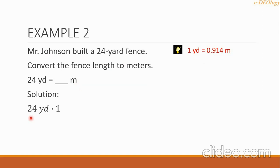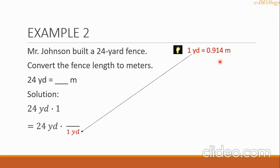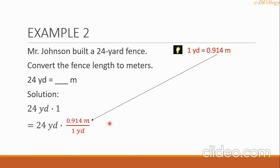For the solution, we multiply 24 yards by a value equal to 1 from the conversion equation. Since we want to convert yards into meters, we put 1 yard in the denominator so that we can cancel the yard unit. The 0.914 meter goes in the numerator. This fraction is equal to 1 because the two sides are equal. Then we cancel the yard unit, leaving only the meter unit.